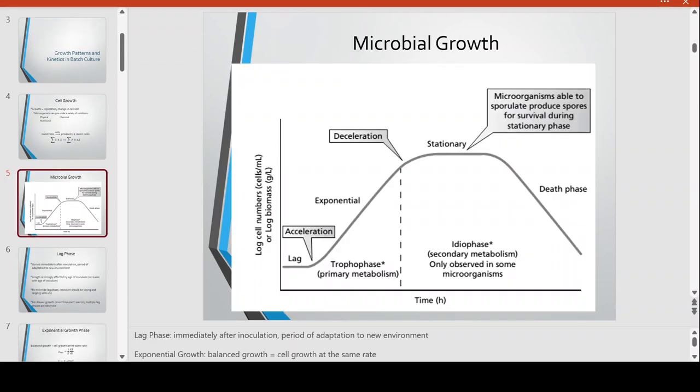Here is the microbial growth curve. In it, you have a logarithm of cell numbers in cells per mL on the y-axis — so the y-axis is a logarithmic axis — over a certain time period. After inoculation, we have a short lag phase where there is no apparent growth. This is the period of adjustment for the cell; it follows immediately after inoculation and is where cells adapt to the new environment.